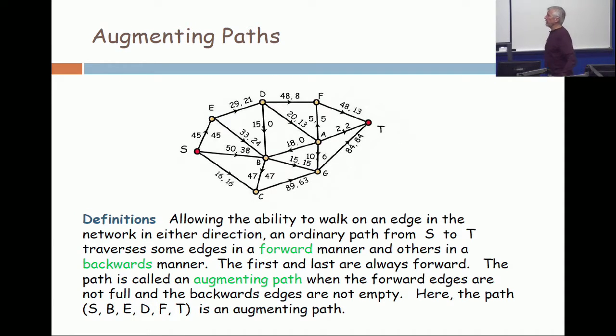We talked about the notion of an augmenting path. It's important in this notion that you're talking about a path in the underlying undirected graph. You simply walk from the source to the sink, ignoring the street signs. The street says one way, this way, you just ignore it and walk on it. It's just an ordinary path. So when you walk on an edge, you're either walking forward with the direction of the arrow or backwards against the direction of the arrow.